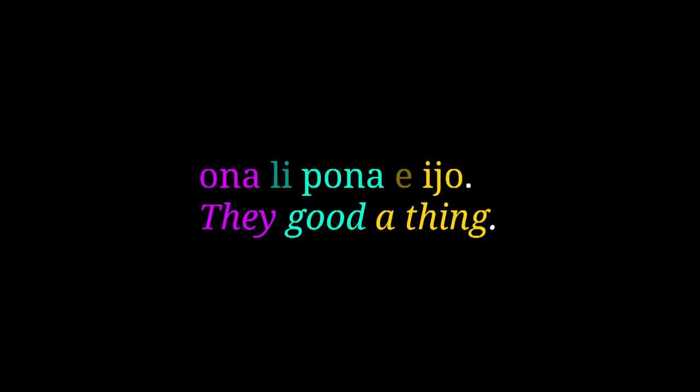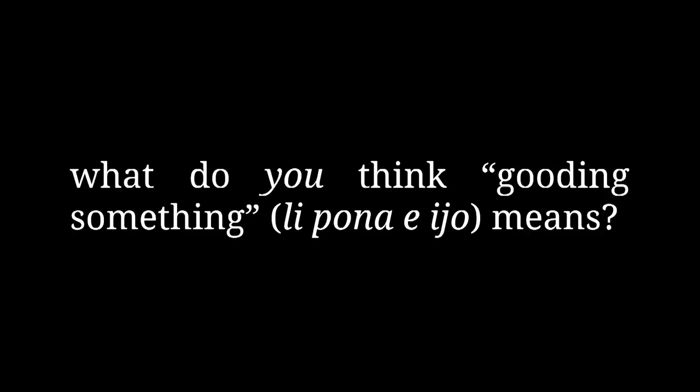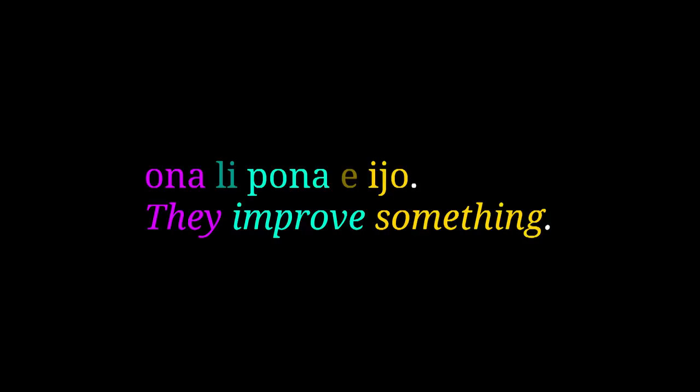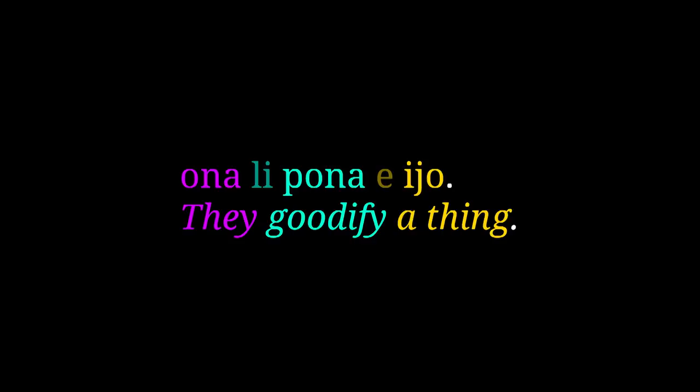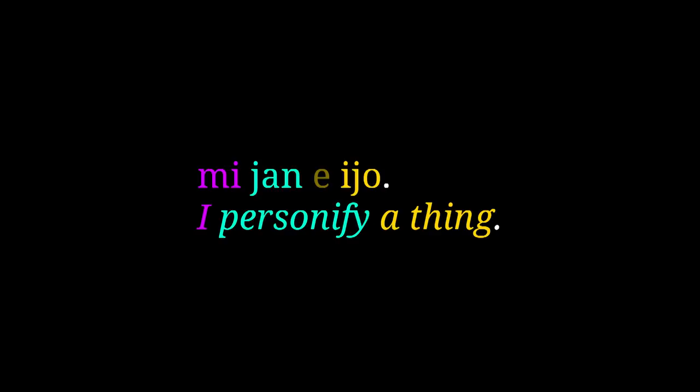Literally, you could translate this as something like 'they good a thing.' You might already have an intuition for what 'gooding something' might mean. It means 'make something good,' 'cause something to become good,' or 'improve something.' In general, when you use a noun or adjective as a verb with an object, this is the default interpretation of what it means—it's somewhat similar to the -ify suffix in English: 'they goodify a thing.' You can say 'mi ike e ijo' for 'I make something bad,' 'mi yan e ijo' for 'I turn something into a person,' and so on. But remember, this interpretation is only there because of the presence of the object in the sentence. Without the object, these examples would have the normal 'is' meaning of those words.